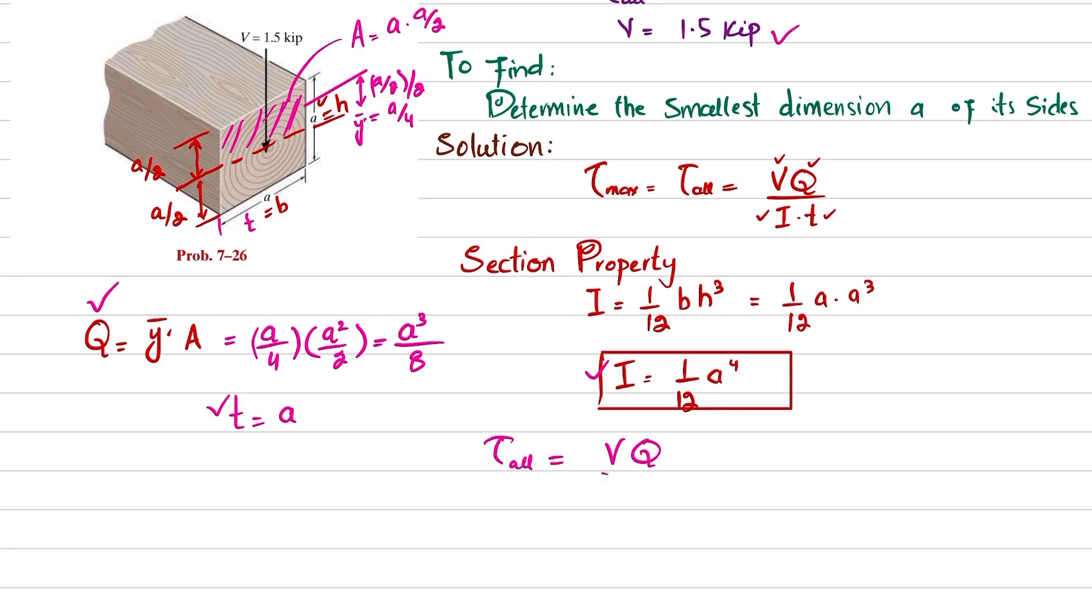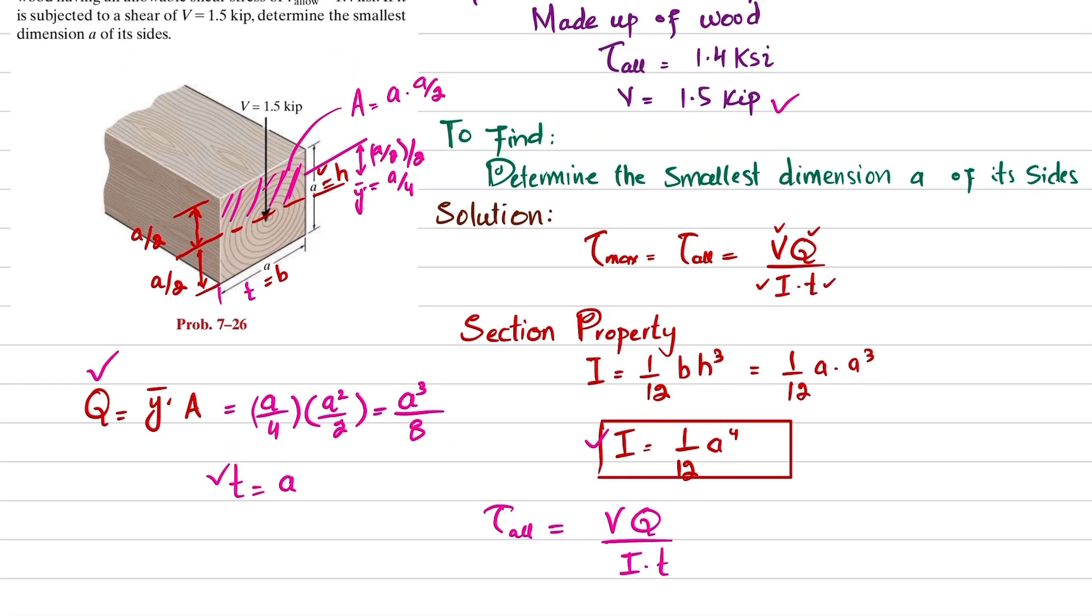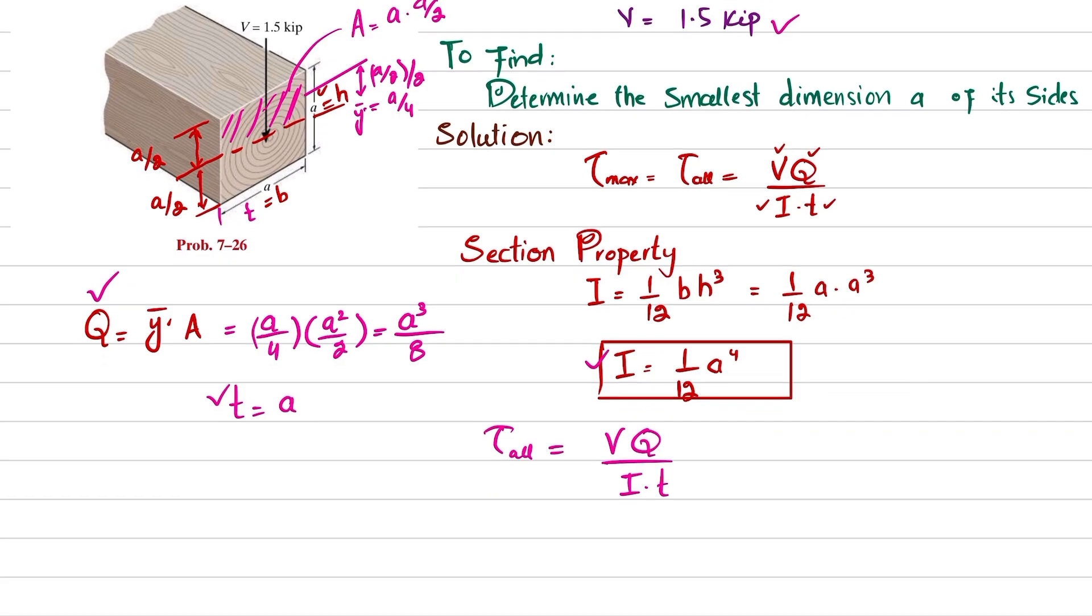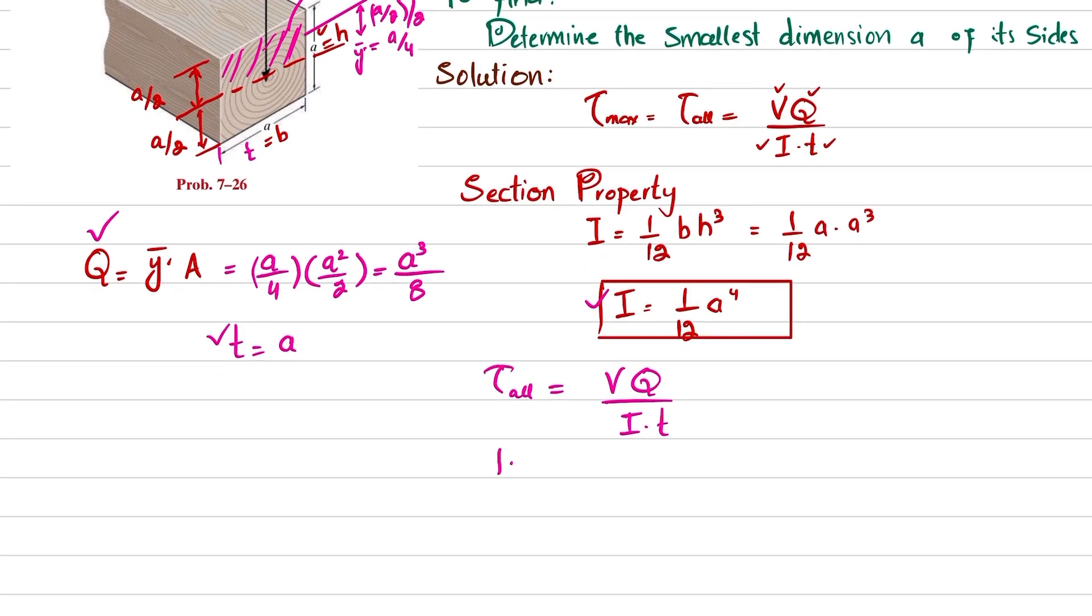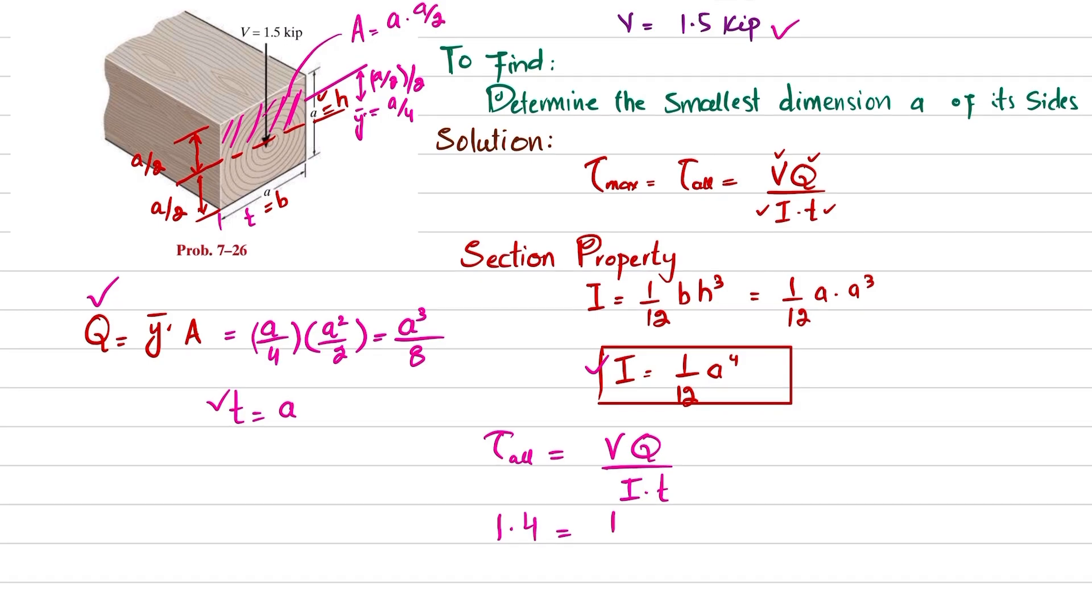τ_allowable is given as 1.4 ksi, so 1.4 is equal to V_max, V_shear which is equal to 1.5, Q is equal to a³/8, divided by I is a⁴/12, and t is a.